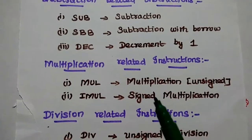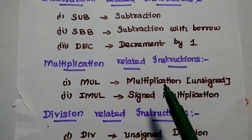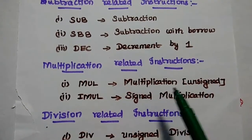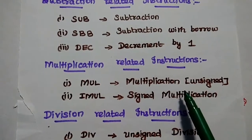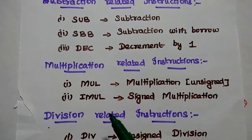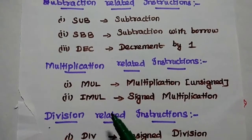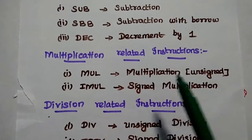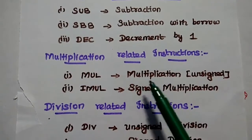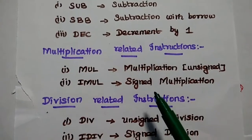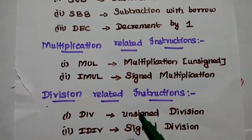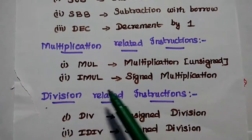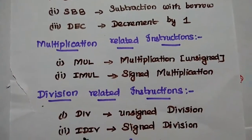Next are Multiplication-related instructions. MUL represents Unsigned Multiplication Process. IMUL represents Signed Multiplication Process. In MUL, we simply multiply the given operand value without considering the sign. But in IMUL, we have to consider the sign value as well.